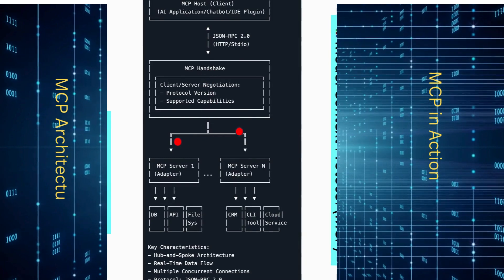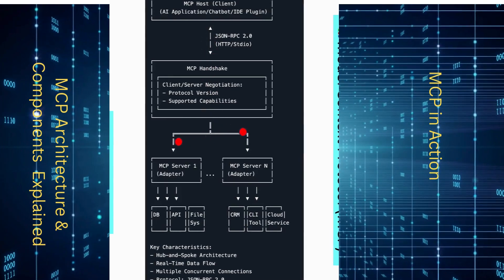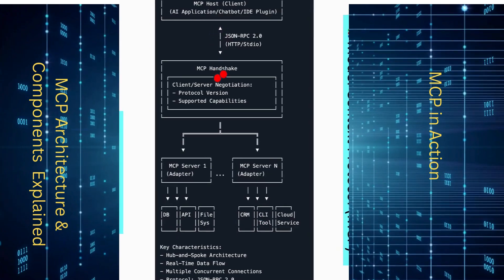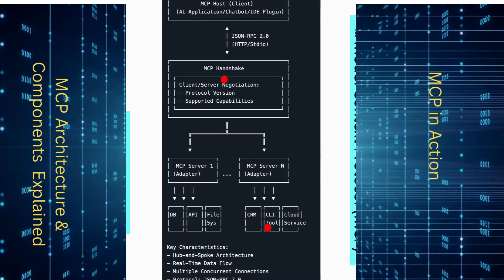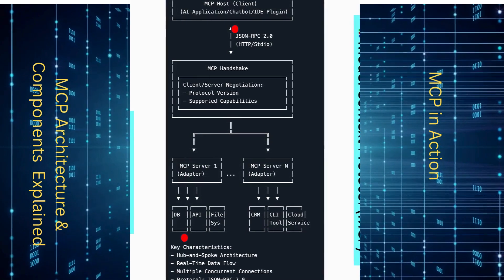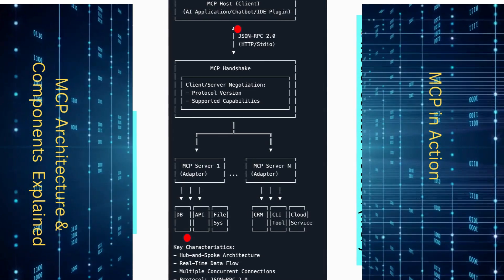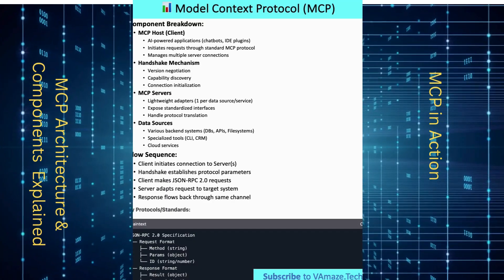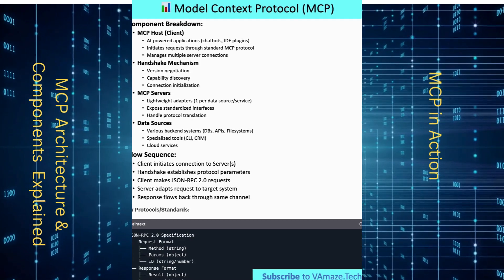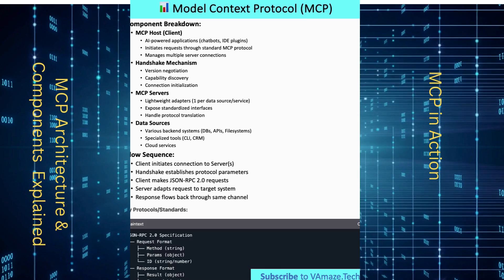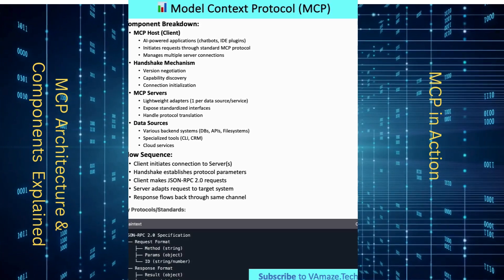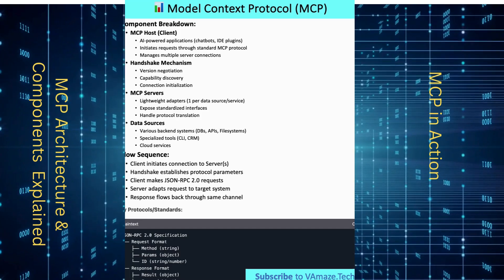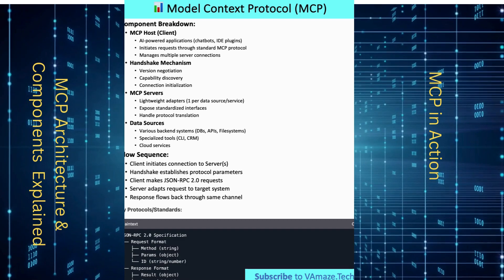MCP is designed to facilitate seamless integration between AI-powered clients — like chatbots, IDE plugins, or applications — and various data sources. The MCP host client initiates communication using JSON-RPC 2.0 over HTTP, stdio, or pipes. The connection begins with a handshake where the client and server negotiate protocol versions and supported capabilities. The architecture follows a hub-and-spoke model where multiple MCP servers connect to the client. Each server acts as a translator, adapting requests to back-end systems: databases, APIs, file systems, cloud services, and specialized tools like CRMs or CLIs. When a request is made, the client uses JSON-RPC 2.0 for standardized communication. The MCP server translates and forwards the request to the appropriate data source, retrieves the response, and relays it back. This approach supports real-time data flow, multiple concurrent connections, and loose coupling between AI systems and diverse data sources, making it flexible and efficient.